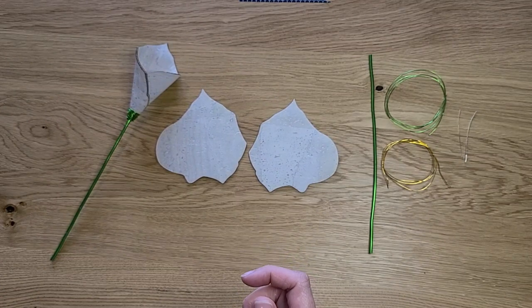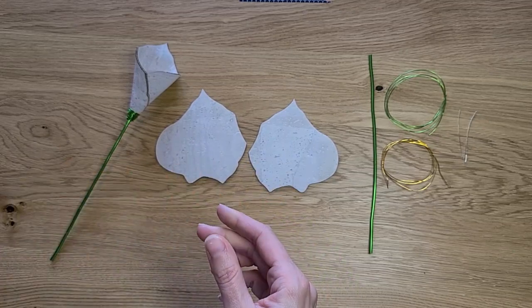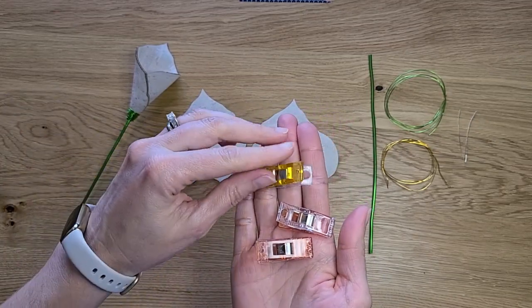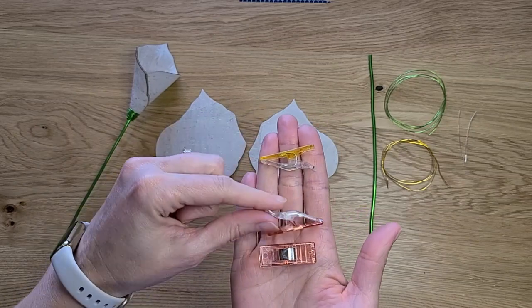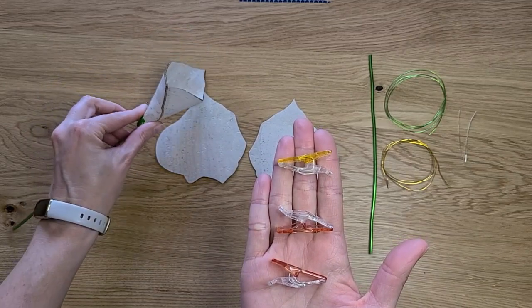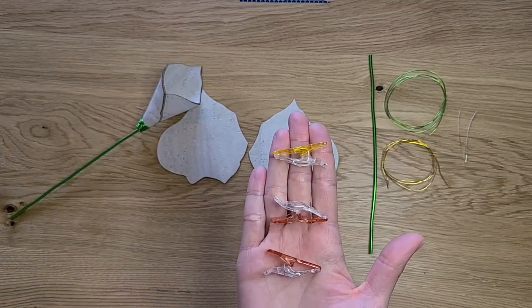It might also be helpful to have some needle nose pliers and some sewing clips or binder clips that will help hold the flower petal in place while the glue is drying so you don't have to sit there and hold it with your fingers and you can move on to the next step.